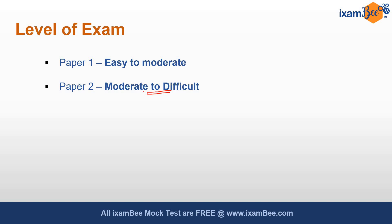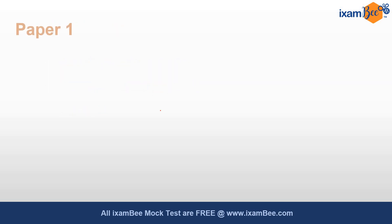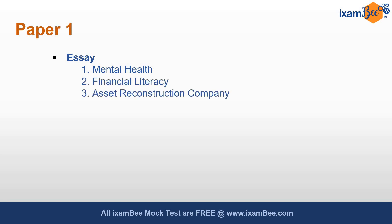Bare act statements were picked up and the options were very confusing. The options were very near to each other, which made the exam level very difficult. Regarding the cutoff, in Paper 1 the essay questions were from 4 topics, out of which 1 essay had to be written: mental health, financial literacy, asset reconstruction company, and turbo stress. These were the essay topics.